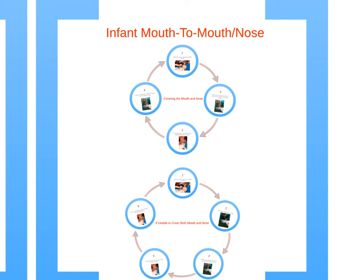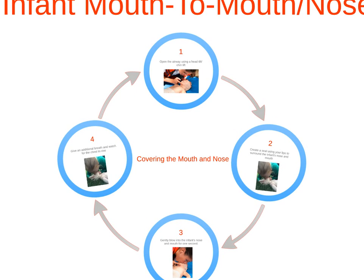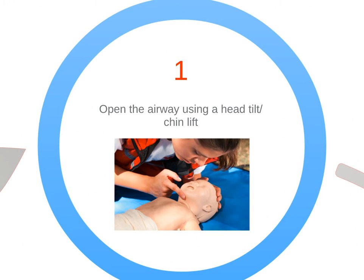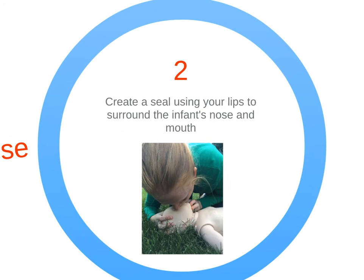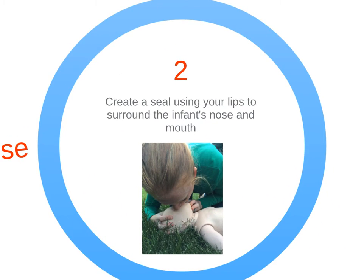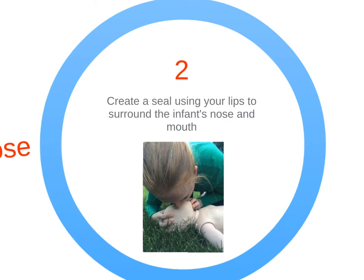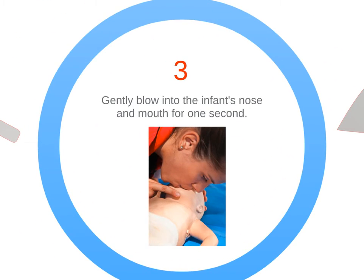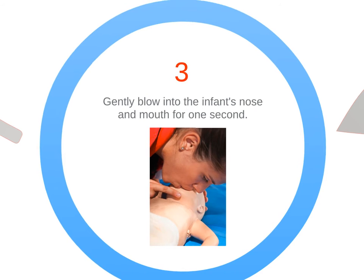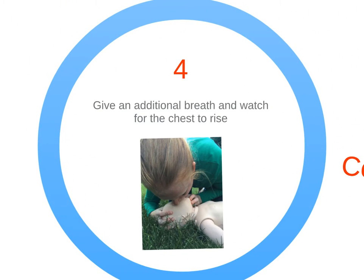There are two different approaches to mouth-to-mouth ventilation for infants. The first is being able to cover both the infant's mouth and nose with your mouth. First, open the airway with the usual head tilt-chin lift. Now create a seal with your mouth covering both the mouth and the nose of the infant. Deliver the breath and watch the chest rise, re-adjusting if necessary. Then deliver a second breath.